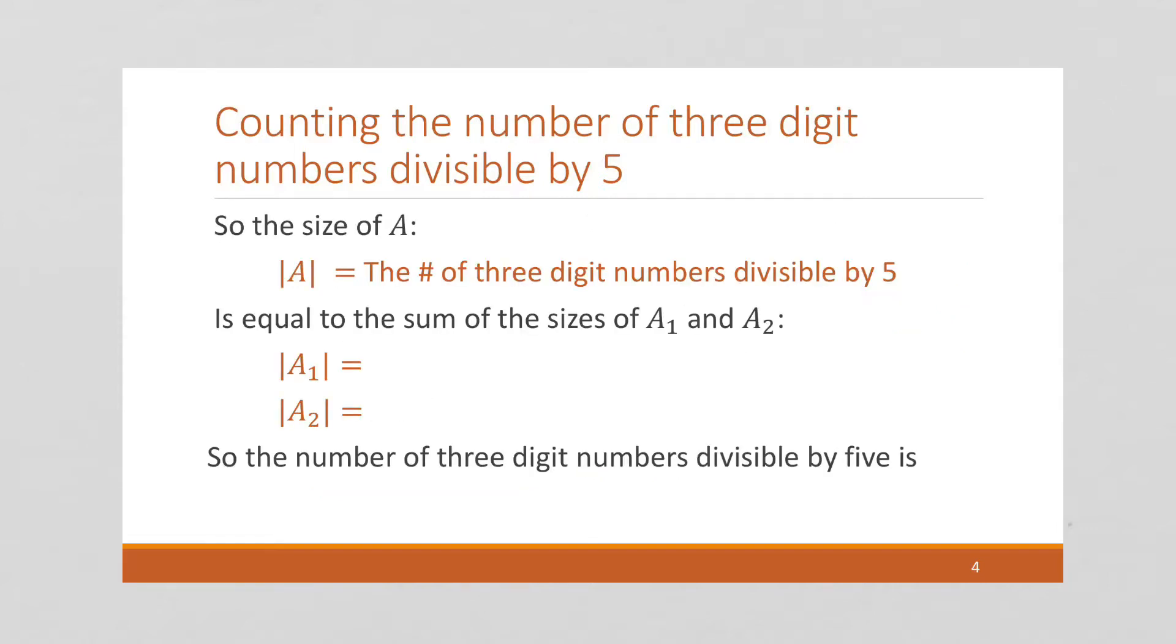So to tie this all together, the number of three-digit numbers divisible by 5 is equal to the sum, as I said on the previous page, of A1 and A2. Each of these was 90. So the total number of three-digit numbers divisible by 5 is 180.